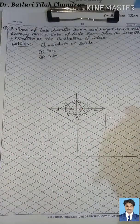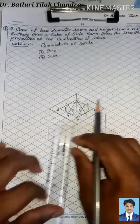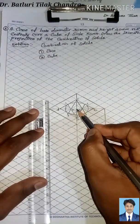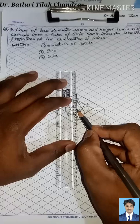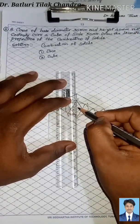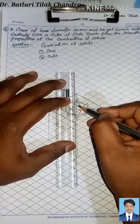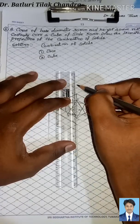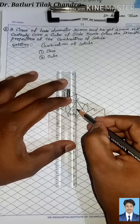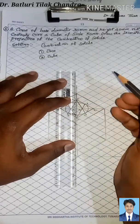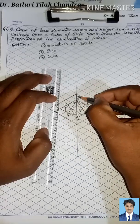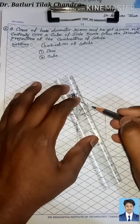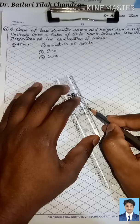Now we have to find the height of the cone. The height is 40mm, which means 4 boxes. From the center, we measure upward 4 boxes - that is O1, O2, O3, and O4. We then draw tangent lines from this apex point touching the base circle of the cone.